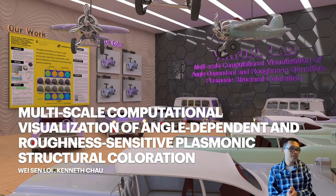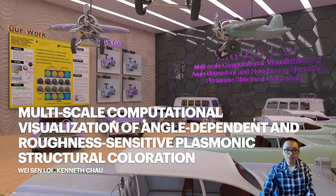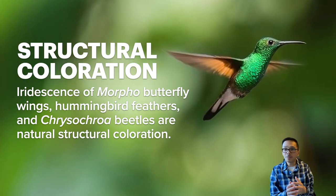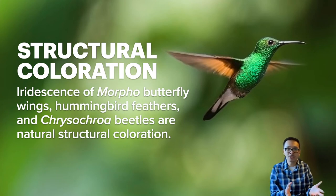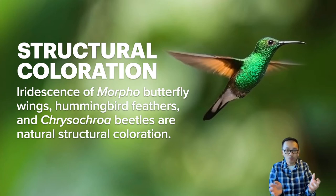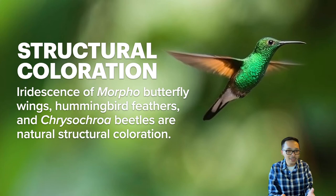Hi everyone, my name is Vincent. Today we would like to start our SIGGRAPH presentation. To begin, let's go into some detail about what structural coloration is. Structural coloration produces color from structure, not from pigment or dye. One of the most common examples is the natural iridescence commonly found in butterflies and insects, as well as from bird feathers.